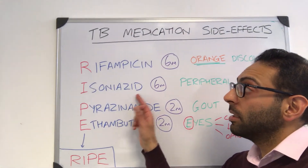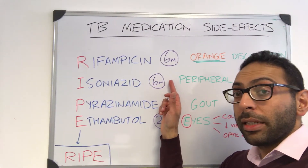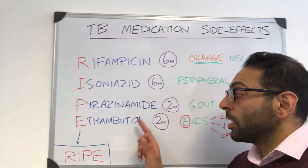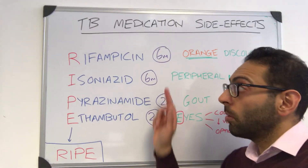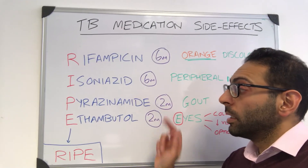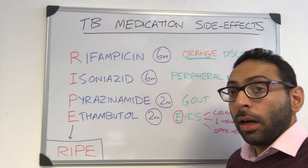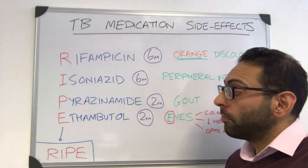Remember duration as well. The first two — Rifampicin and Isoniazid — are used for six months, whereas Pyrazinamide and Ethambutol are used for two months. So the top two are six months, the bottom two are two months.